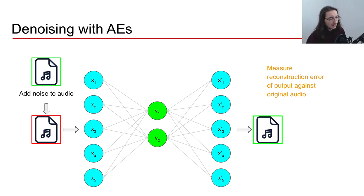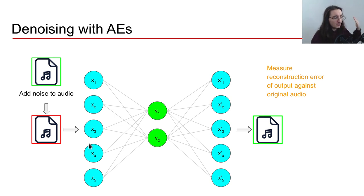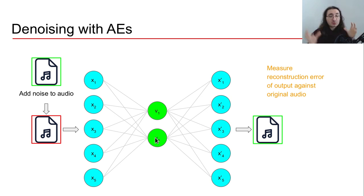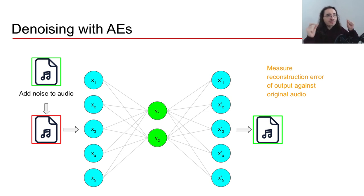The key is the bottleneck and the latent space. By using the reconstruction error between the output and the original clean audio, we hope to encode only the most important features of the audio signal in the latent space, leaving out unnecessary details like noise. So we encode the noisy signal down into the latent space — which hopefully leaves out the noise — and when we pass it through the decoder, we get back an audio file that sounds more like the clean original. This again shows how important a good latent space representation is.